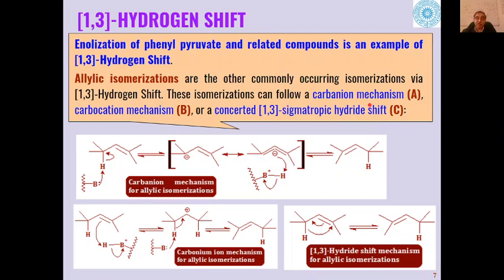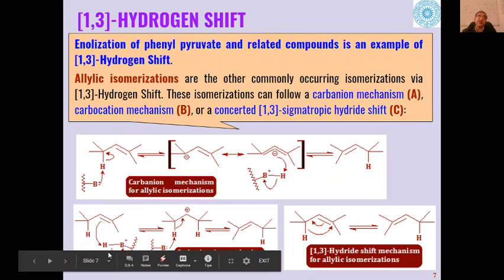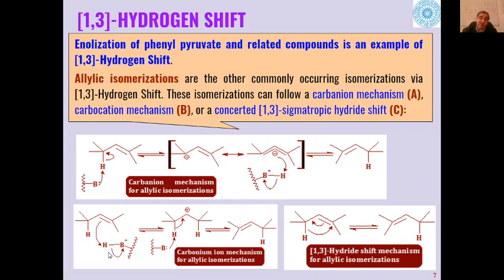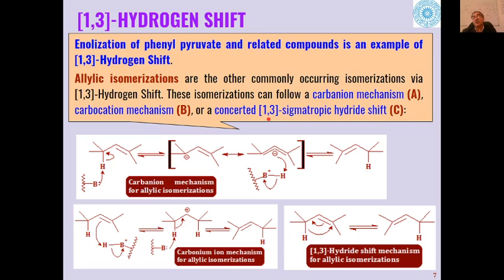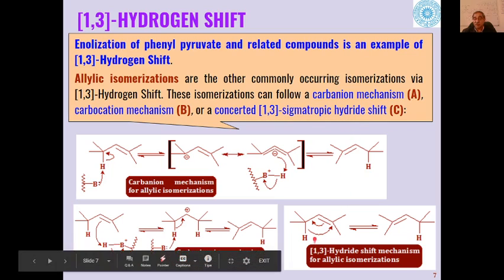The second mechanism is the carbocation mechanism: the first active site (acidic) provides a proton to the allylic double bond, converting it into a carbocation, then the other active site acts as a base to abstract the proton, giving the 1-3 hydrogen shift product. The third mechanism is the concerted 1-3 sigmatropic hydride shift, where the hydride shifts directly from one position to another with simultaneous movement of the carbon-carbon double bond. Any of these three mechanisms can operate in enzyme-catalyzed 1-3 hydrogen shift reactions.